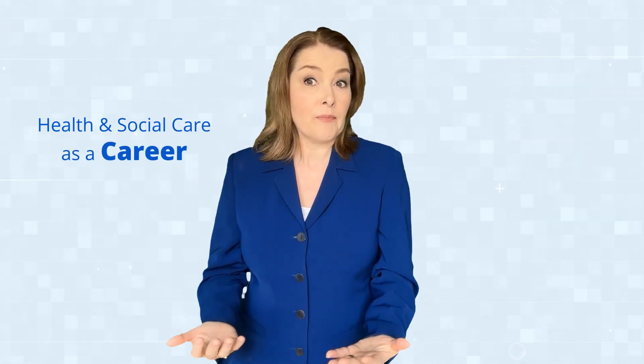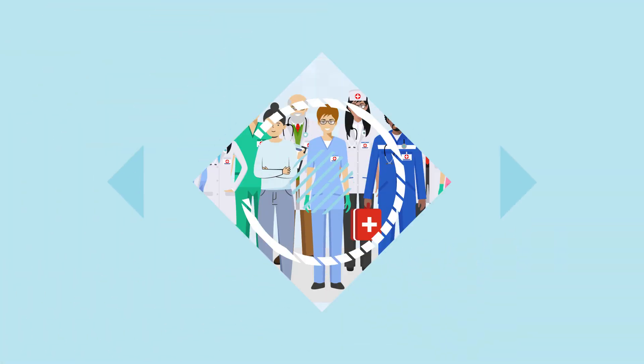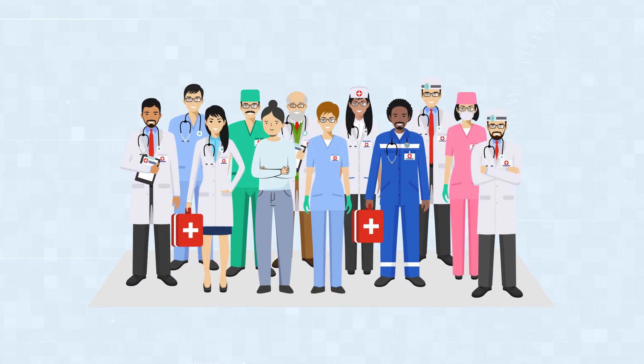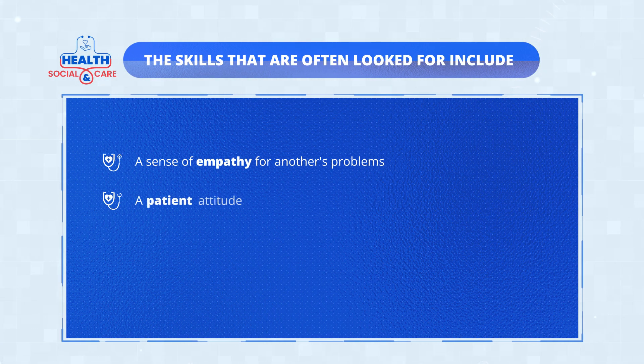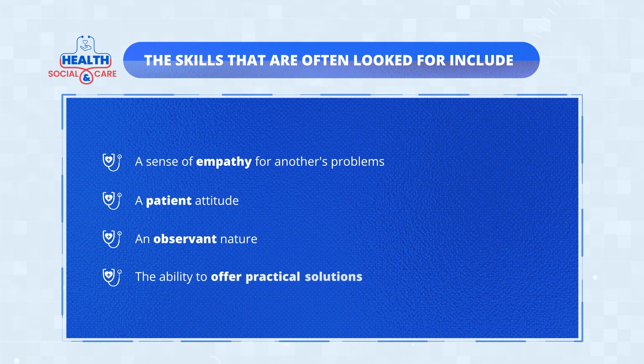Before concluding, let's highlight the significance of health and social care as a career. A job in this field allows you to help less fortunate people and have a positive effect. Kindness has a ripple effect that benefits not only the recipient but also the giver, creating a better world for all. There are several career paths to choose from, including care worker, social worker, occupational therapist and mental health assistant. Courses are available to help you gain the required skills, which typically include empathy, a patient attitude, an observant nature, and the ability to offer practical solutions.